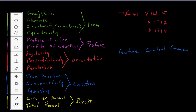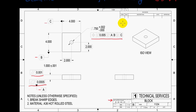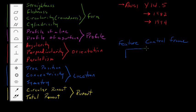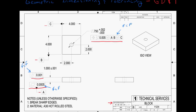The first type is what we call a feature control frame. I'll show you where they are on the drawing — these are feature control frames. In its simplest form, a feature control frame is a rectangular frame with one of the GD&T symbols on the left side and a tolerance value on the right. They can be more complex than this, but in its simplest form that's what they look like.